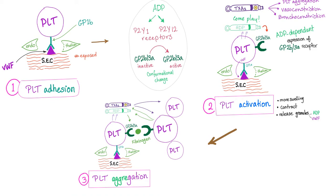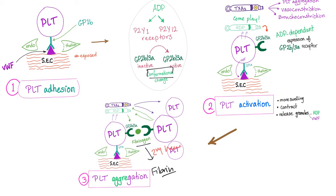Platelet activation occurs by secreting ADP and thromboxane A2. ADP is a great whistleblower, and it causes ADP-dependent expression of the GP2B3A receptor. Here's the real story: ADP binds to the P2Y12 receptor on the platelet. The P2Y12 receptor then transforms GP2B3A from its inactive form into the active form via a conformational change — a change in shape. After this, GP2B3A is active and ready to bind other platelets. A molecule of fibrinogen is present in between, and then fibrinogen is converted into fibrin — this is secondary hemostasis, also known as the thrombus or the coagulation cascade.